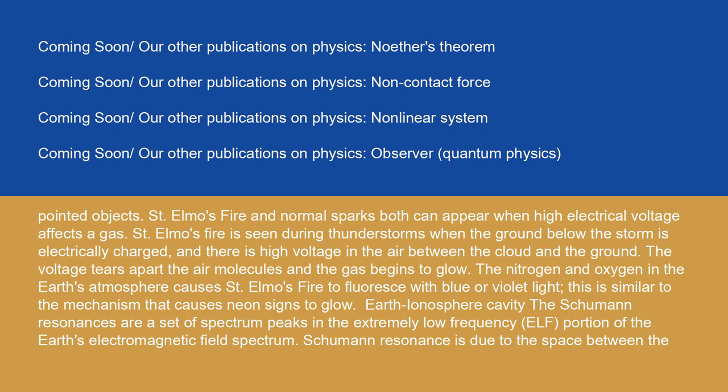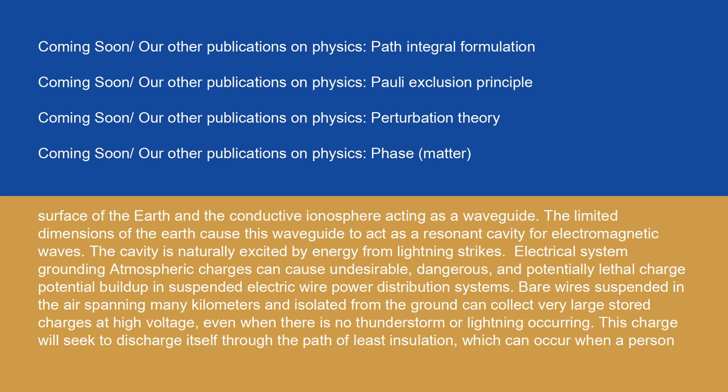Earth-ionosphere cavity: the Schumann resonances are a set of spectrum peaks in the extremely low-frequency portion of the Earth's electromagnetic field spectrum. Schumann resonance is due to the space between the surface of the Earth and the conductive ionosphere acting as a waveguide. The limited dimensions of the Earth cause this waveguide to act as a resonant cavity for electromagnetic waves. The cavity is naturally excited by energy from lightning strikes.